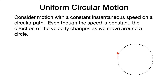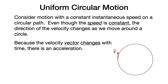The red arrow denotes a velocity vector tangent to the circular path. Notice that as we move around the circle, the direction of the velocity vector changes. And because the velocity vector changes with time, there is an acceleration, even though the speed is constant.